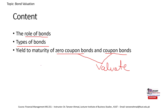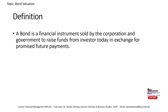Let's start with the definition of a bond. A bond is a financial instrument sold by a corporation or government to finance their projects, and they promise future payments on those financial instruments. Before we move forward, let's discuss the basic ideas. A financial instrument is nothing but an agreement between two parties.